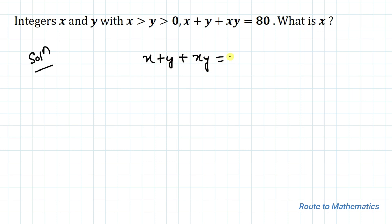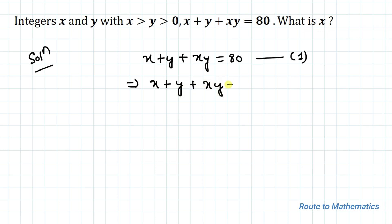So we have x plus y plus xy equals 80 — let's take it as equation 1. In order to factorize this equation, let's add 1 to both sides, giving us x plus y plus xy plus 1 equals 81.